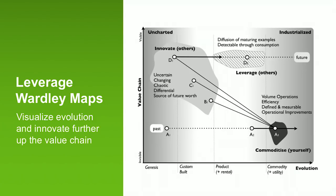The point of this particular map is to say: in the past, you used to have something that was completely custom built, and over time it has moved through to being a commodity. You then take that commodity and build new things on top of it, which are uncertain, changing, chaotic, and a differential source of future worth. You build those out, you innovate on them, and then you take those things through and commoditize them. So there are layers and layers of technology building up.